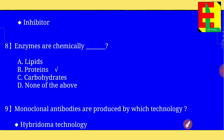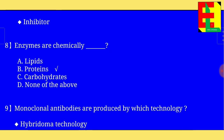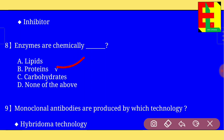Question number eight: enzymes are chemically — from the four options given — the answer is: enzymes are chemically proteins.